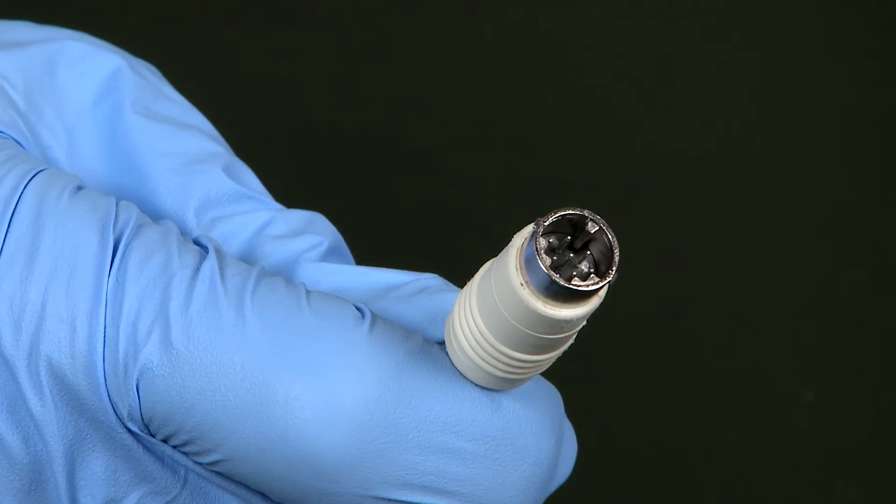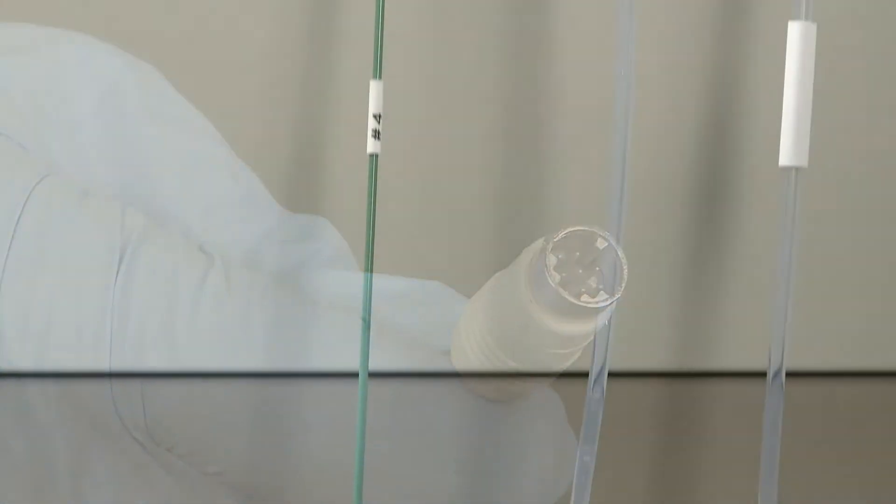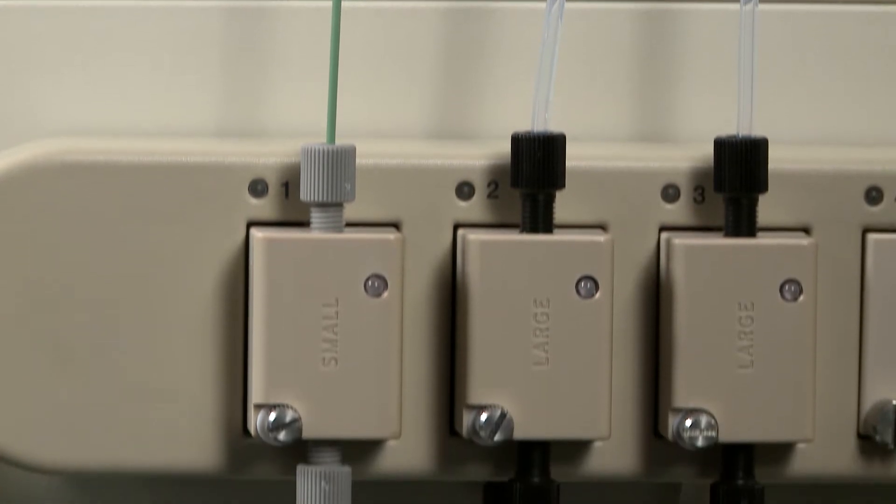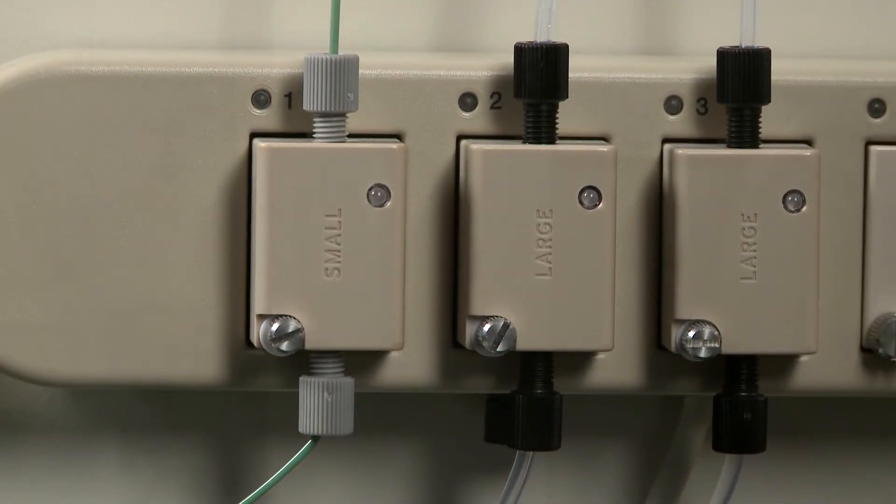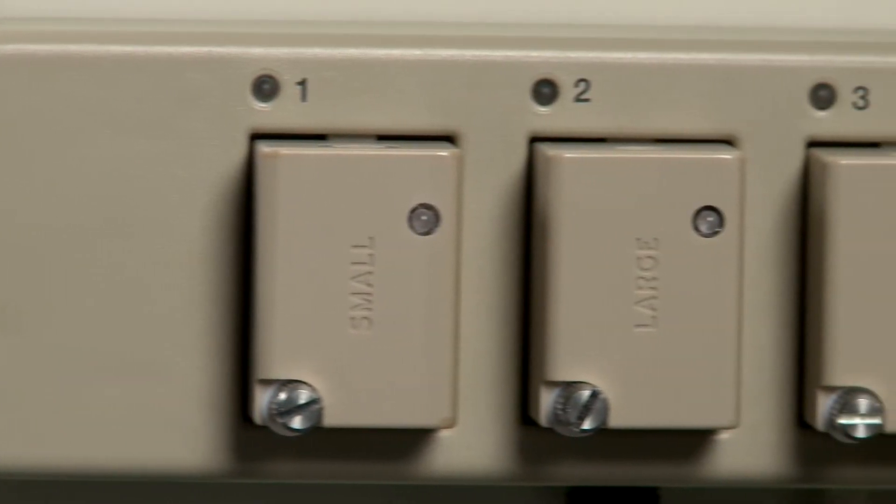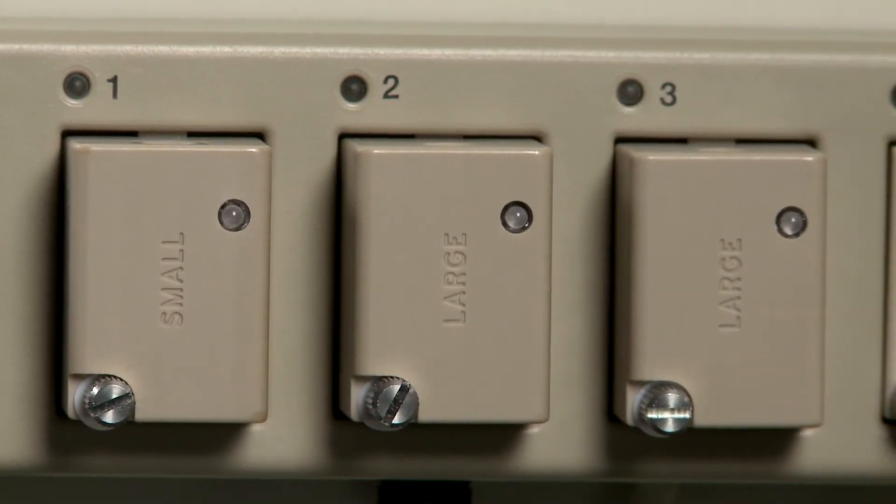Individual air sensors are available in two sizes: a large-bore sensor for use with one-eighth-inch PTFE tubing and a small-bore sensor for use with one-sixteenth-inch PEEK tubing.